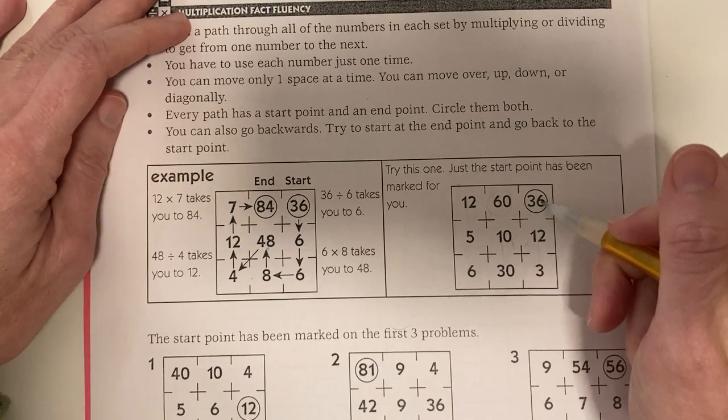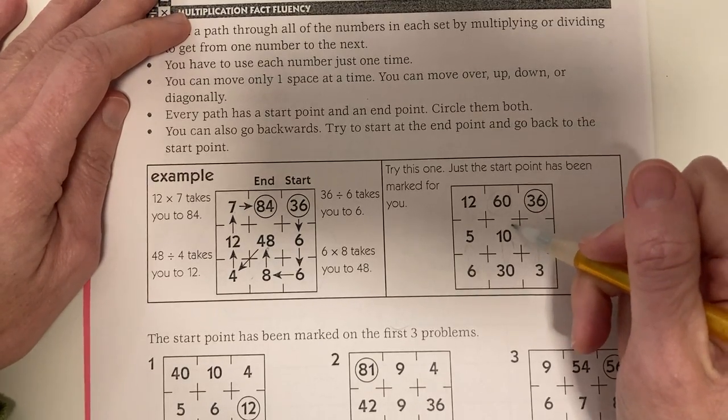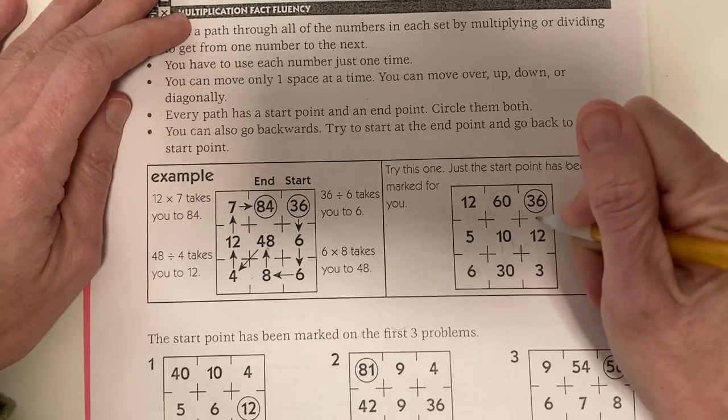In this one, the start point's been marked for you. So you start at 36. I know I can't divide 36 by 60 or 10, so I'm going to go this way.